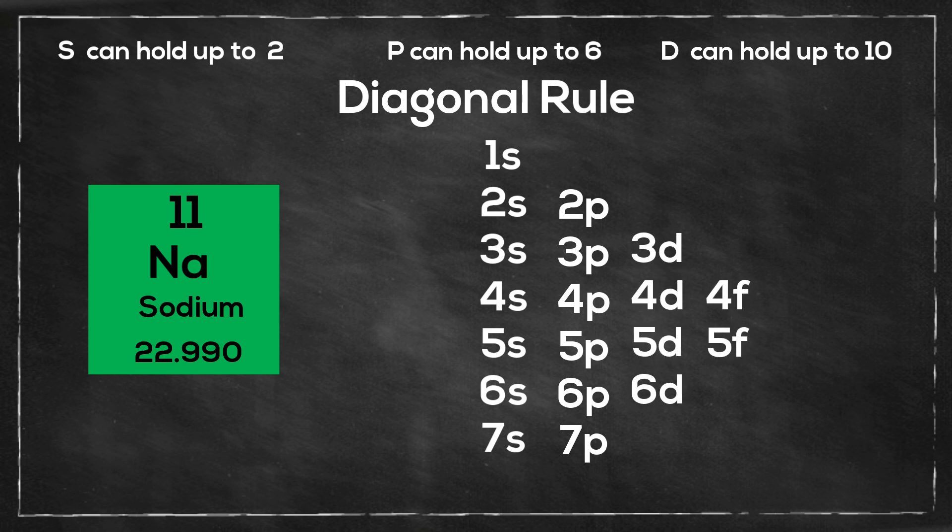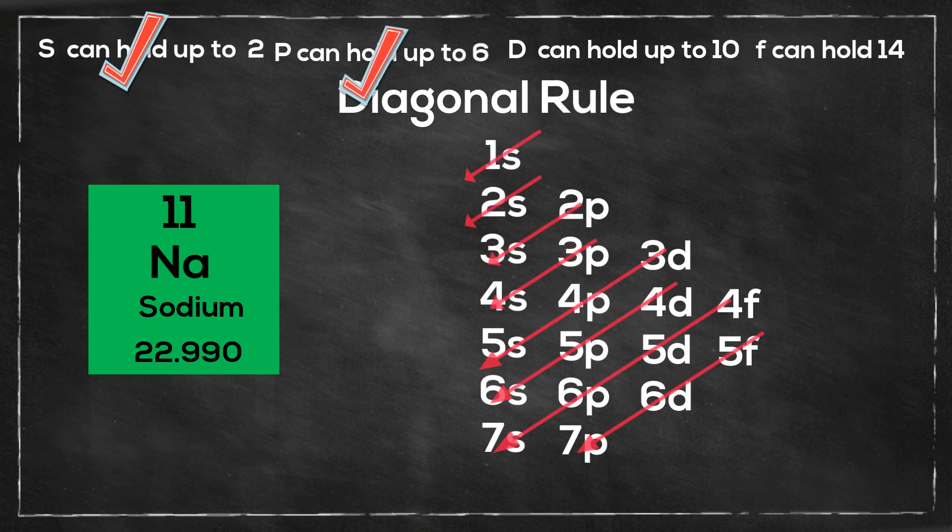The s orbital can hold up to two, the p orbital can hold up to six, the d orbital can hold up to ten, and the f orbital can hold up to fourteen. And notice that they go up by four each time.